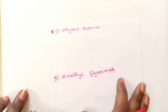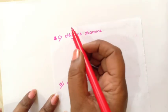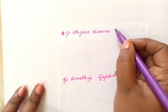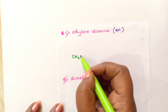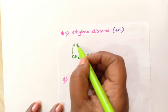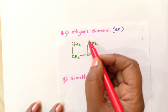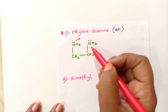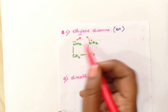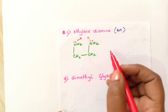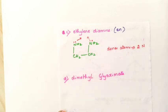The third bidentate example is ethylene diamine, represented by the short form EN. The structure is CH2-CH2 with NH2 and NH2. Nitrogen has a lone pair of electrons on each end, so through one nitrogen atom one coordination bond and through the other nitrogen atom one more coordination bond. So two coordinate bonds are formed, therefore ethylene diamine is a bidentate ligand. Donor atoms are two nitrogen atoms.